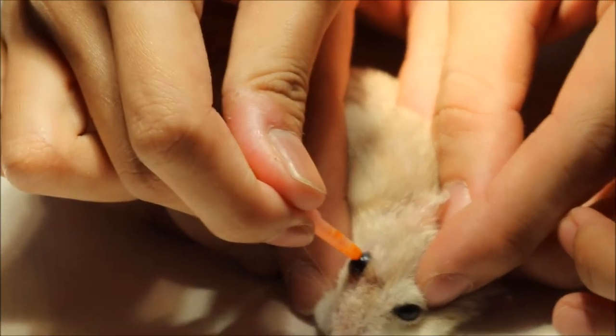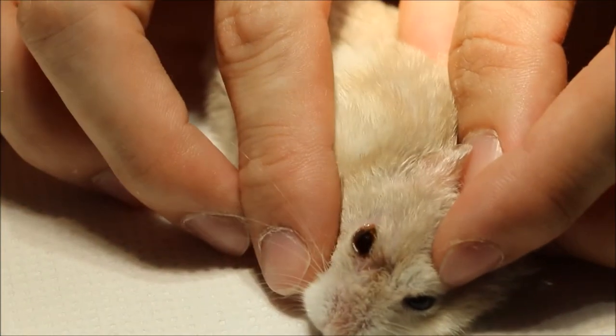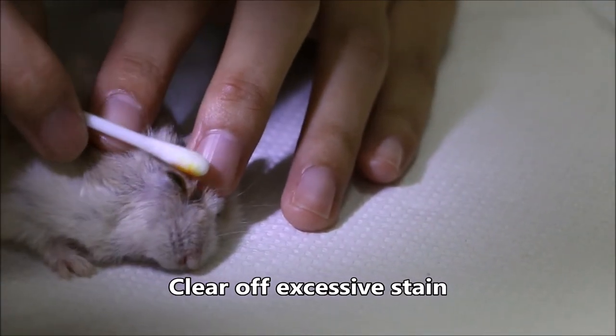Let's try one drop of the fluorescent stain on the right eye and wait for around 1 minute. The excessive stain was cleared off.